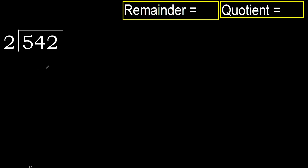542 divided by 2. 5 is not less, therefore with 5, multiply by which number is nearest to 5 but not greater. 2 multiply by 3 is 6 — 6 is greater. Multiply by 2: 4 is not greater. Subtract: 5 minus 4 is 1.